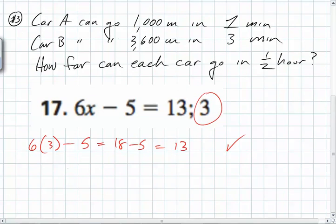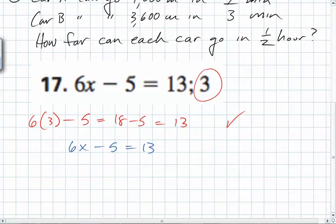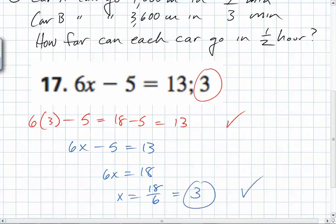Another way to check it would be to actually solve for x. So how would you do that? What would you add to both sides? So you get 6x equals 18, so x is equal to 18 over 6, which is 3. So does that work, too? Yeah.